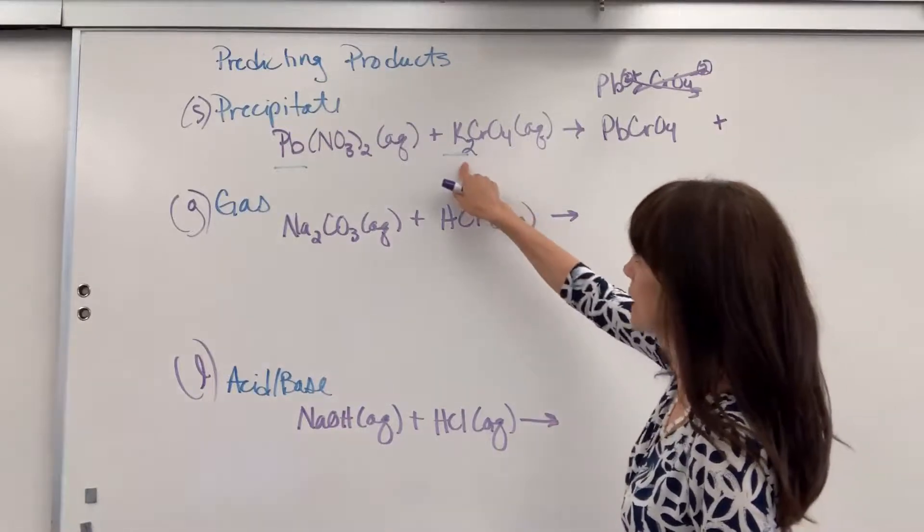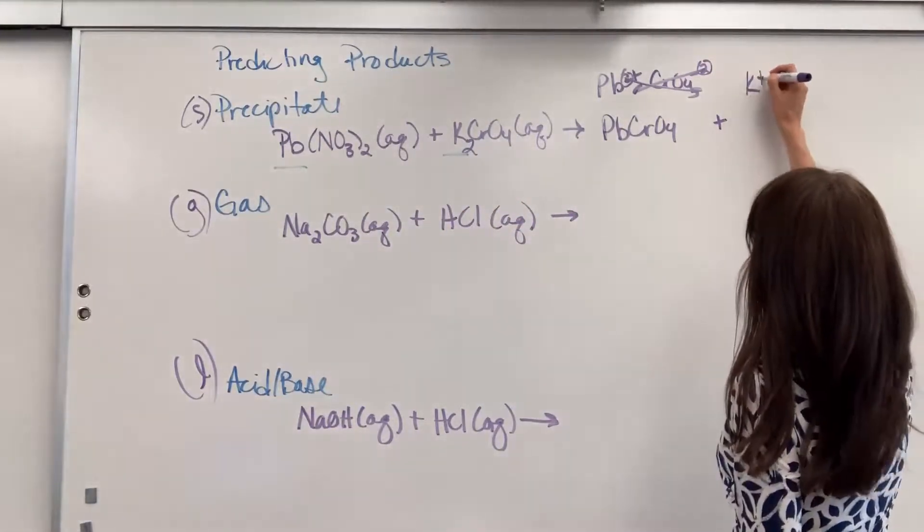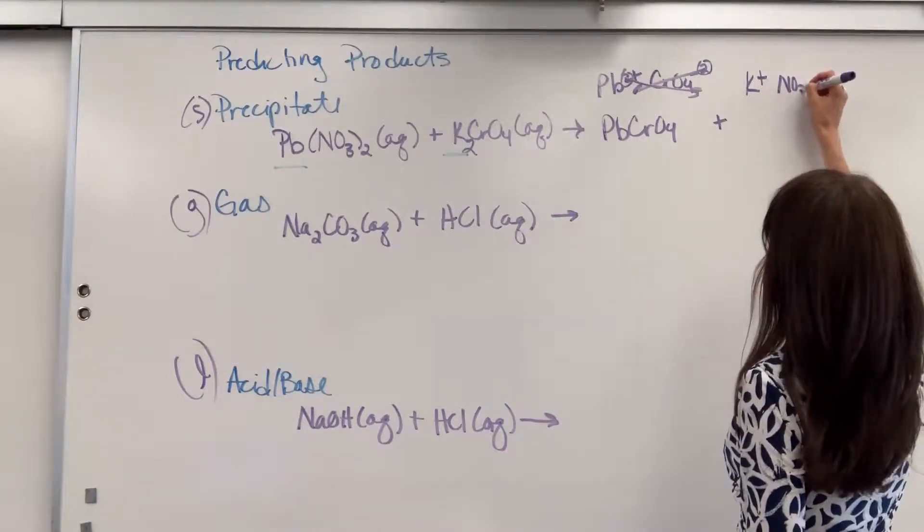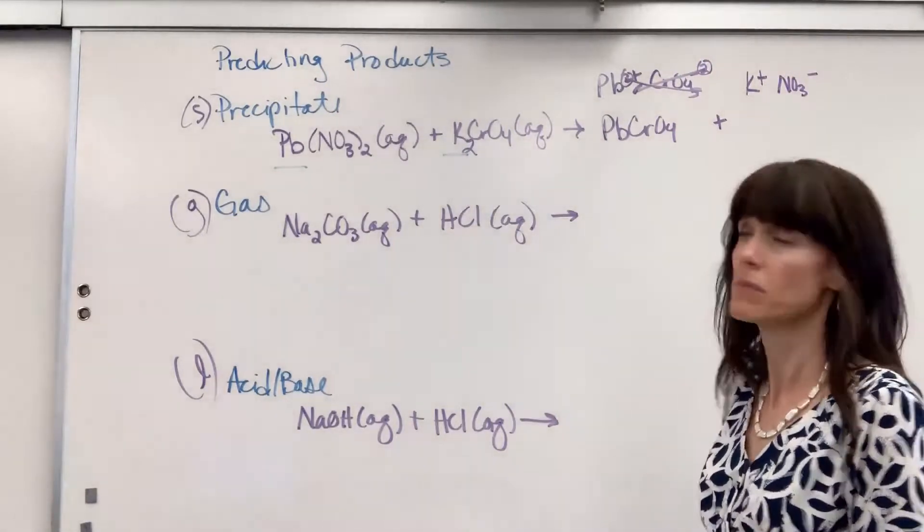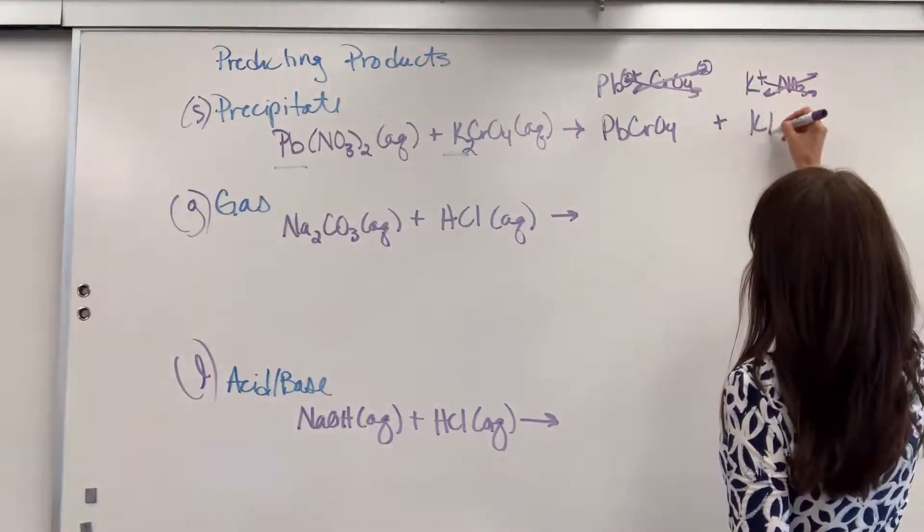Now I'm going to take the potassium and combine it with the nitrate. We've got a K+, and that's going to combine with the nitrate, which is a minus one. Cross down those charges, and you get KNO3.